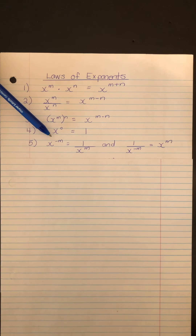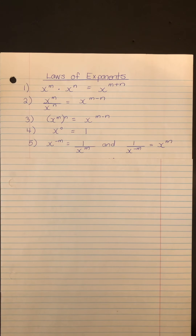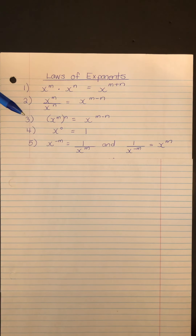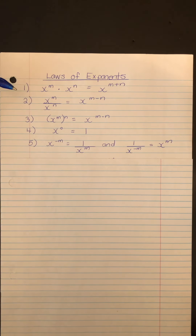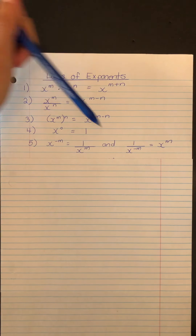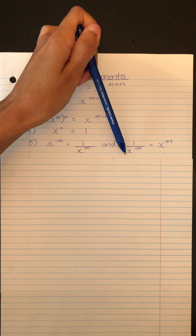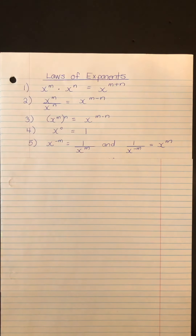Any base at all with an exponent of zero is equal to one. Finally, if you have a negative exponent — x to the negative m — this is the same as having one over x to the positive m. This is also true if the negative exponent is in the denominator; we can rewrite it as x to the positive m.